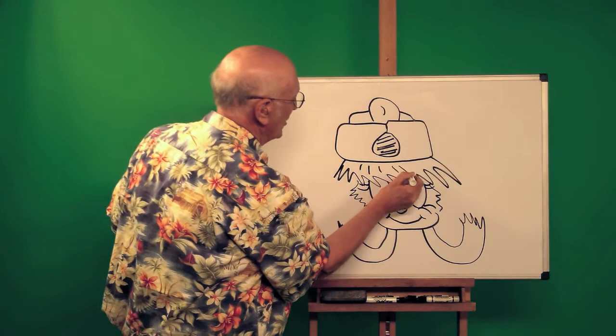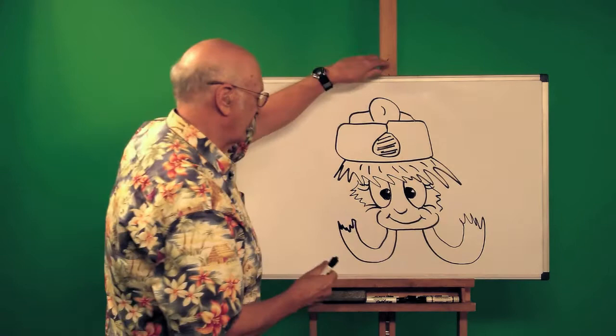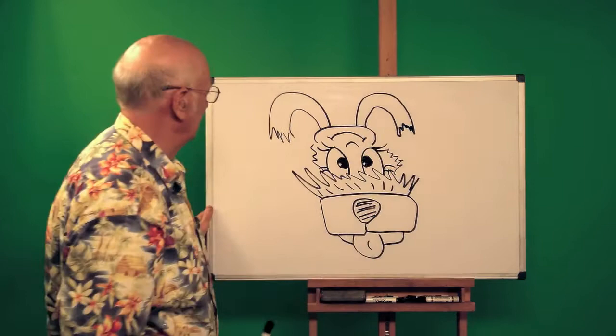And then you can add some lines here if you want to make it look more like hair. So there we have a little girl with long hair. Let's turn her upside down and see what we have. A dog - or it could be whatever.